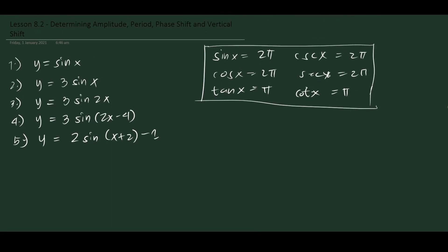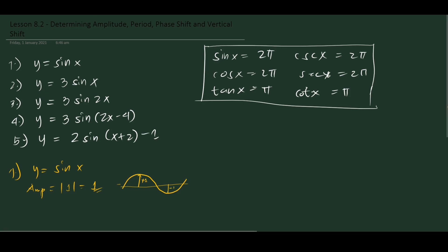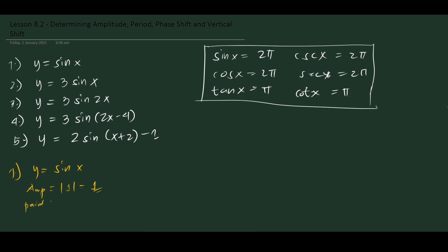Let's start with the first one: y = sin x. The amplitude is the absolute value of 1, which is 1 — since the graph goes from positive 1 to negative 1, we use the absolute value as amplitude is a magnitude. The period, as noted, is 2π. That is the basic sine function.